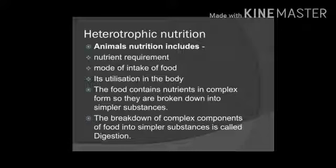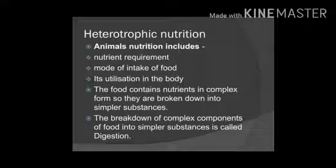So they are broken down into simpler substances and then utilized in the body. The breakdown of complex components of food into simpler substances is called digestion. Whatever food animals consume, its breakdown happens into simpler substances, which are then absorbed and utilized by the body — this is called digestion.